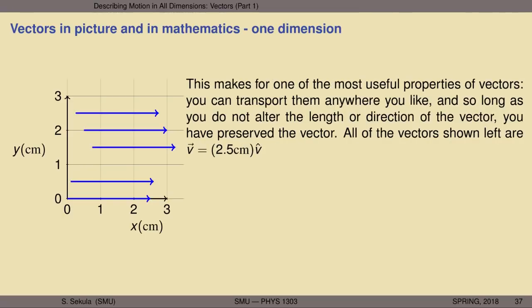This leads to one of the most useful properties of vectors: you can transport a vector anywhere you like, and so long as you do not alter its length or direction, you have preserved the vector. The vector is invariant under transformations of its location in space that do not alter its direction or length. All the arrows shown in the picture are in fact the same vector v = 2.5 centimeters × v-hat, just transported around in space.